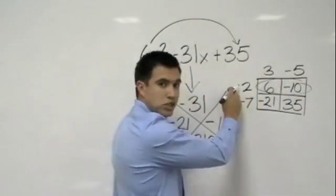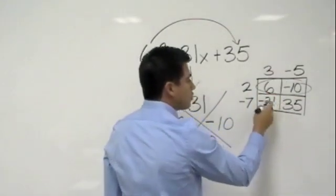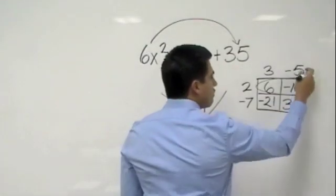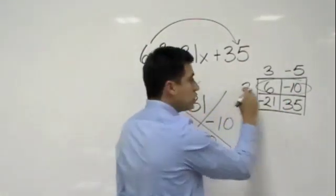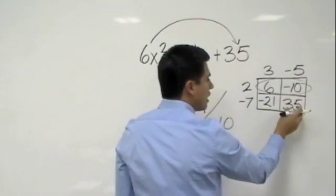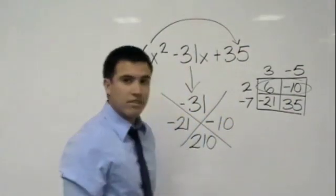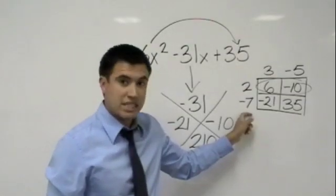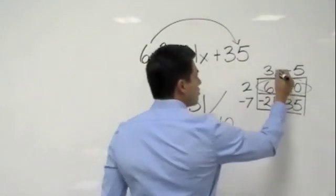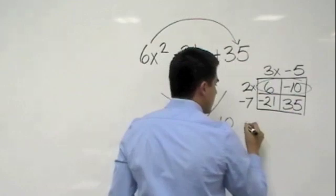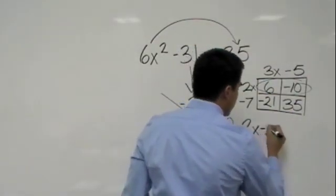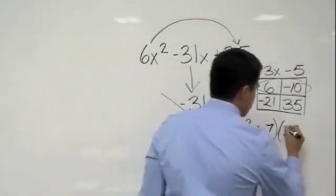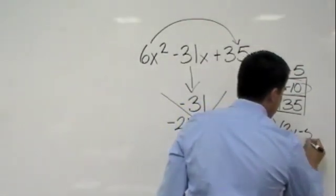3 divided by 6 gives me 2, and 3 divided by negative 21 gives me a negative 7. If you want to check it, negative 5 divided by negative 10 is a positive 2, and negative 5 goes into 35 negative 7 times. Now we just put our variable here, x and x, and that's 2x minus 7 times 3x minus 5. We found our answer.